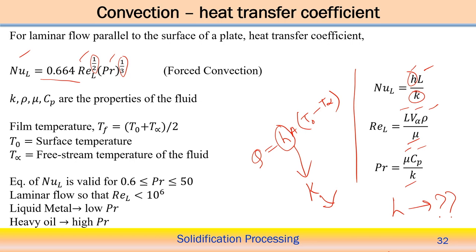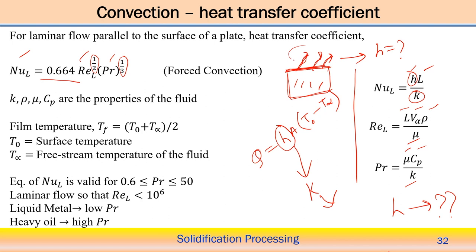The properties K, ρ, μ, and Cp — thermal conductivity, density, viscosity, and specific heat — are all properties of the fluid. For example, suppose there is a ladle with liquid metal, and heat transfer occurs from the surface — partly by convection and partly by radiation. If we are assuming convective mode of heat transfer from the surface, we need to know the value of h. The nature of the fluid — whether laminar or turbulent flow — determines the value of h.